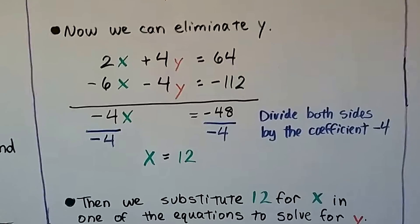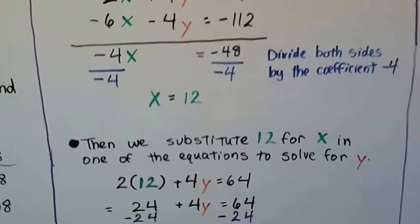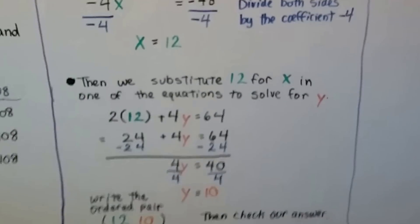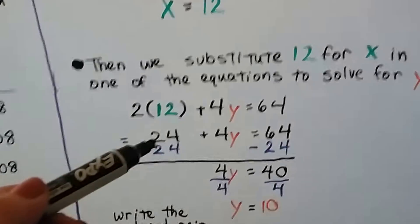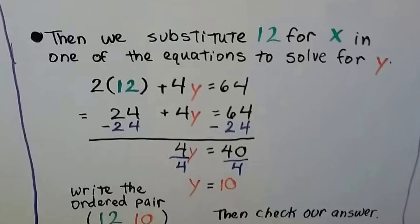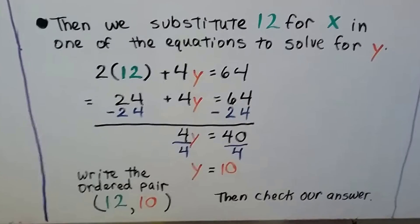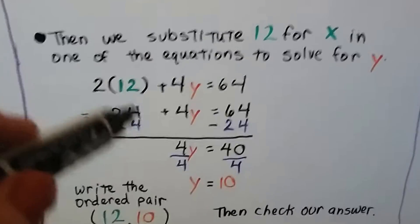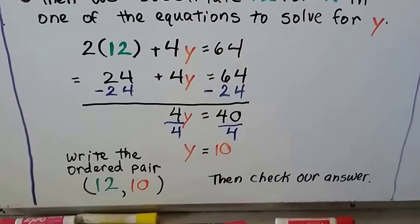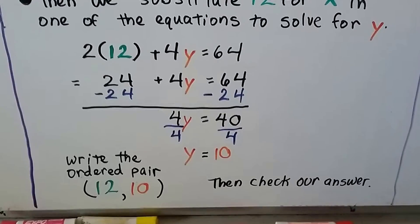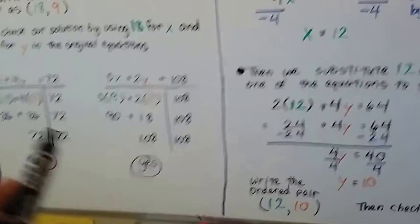We divide both sides by the coefficient negative 4. And this makes a positive 1x equals a positive 12. And we substitute the 12 for x in one of the equations, doesn't matter which one, whichever one is easier, to solve for y. So I chose the first equation. We have 2 times 12, because that's what x is, is 24 plus 4y equals 64. And we remove the 24 from each side of the equation. You can say we're adding a negative or you can say we're subtracting 24. It doesn't matter. It's going to give us the same thing. That's going to create a zero pair here. And we're left with 4y equals 40. We divide both sides by that coefficient 4. And we're left with 1y equals 10. We write our ordered pair. We got a 12 for x and a 10 for y. Then we check our answer like this.